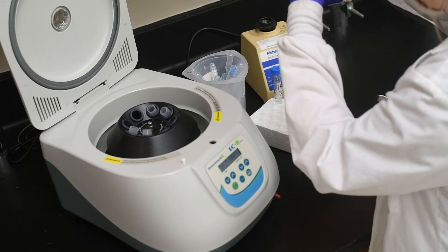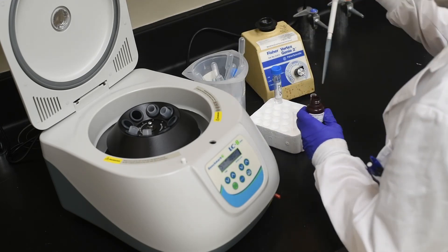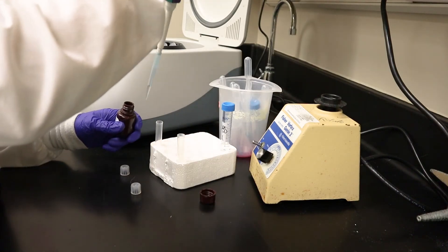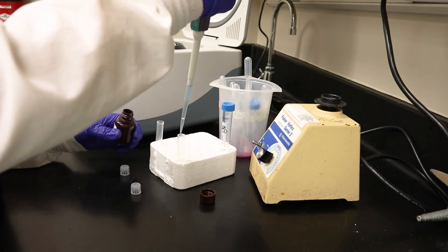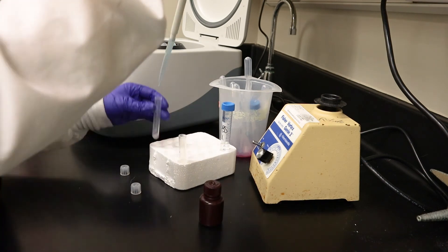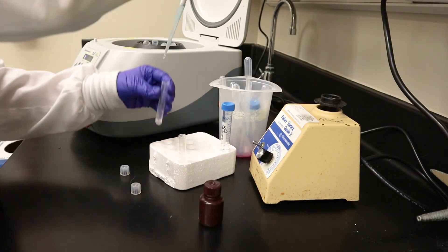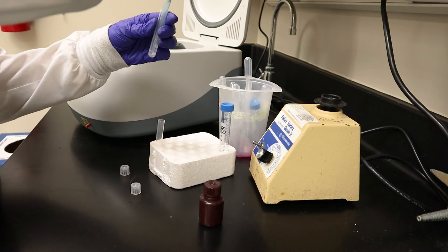Once the tube was empty with only the pellet present, I added 200 microliters of the Muse cell cycle reagent. I triturated my cells within the reagent to resuspend them and then placed them into a drawer protected from light for 30 minutes.